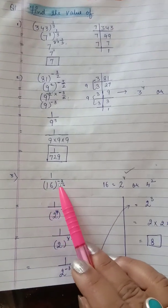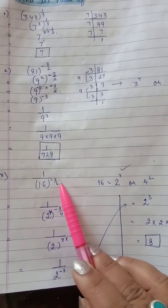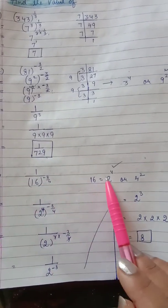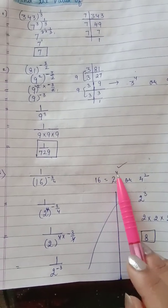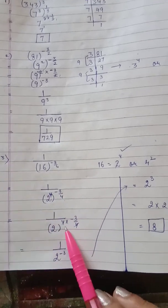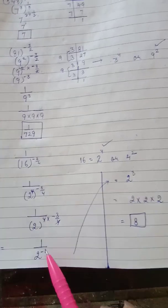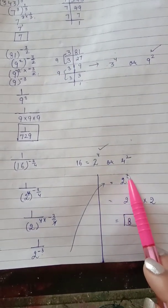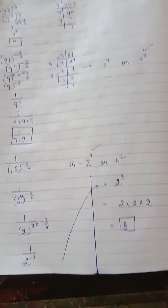Next: 1/16 to the power minus 3/4. First change the fractional power, then apply the negative power law. 16 can be written as 2 to the power 4. Second power minus 3/4 — 1 base, 2 powers, powers will be multiplied. 4 and 4 get cut, giving 1/2 to the power minus 3. Negative power — reciprocate the base, power becomes positive. 2³ = 2×2×2 = 8.